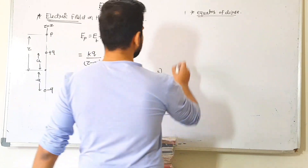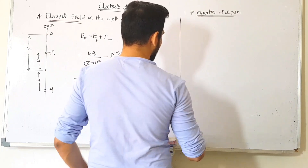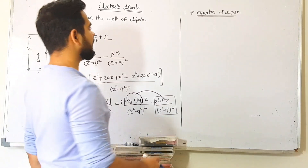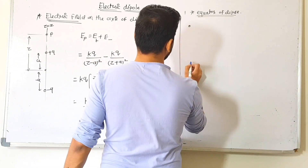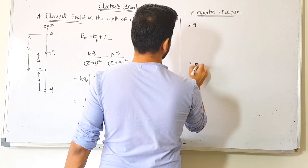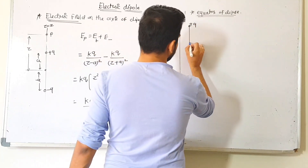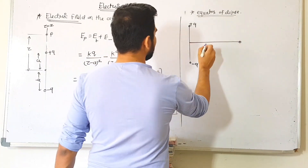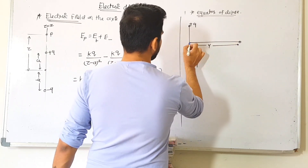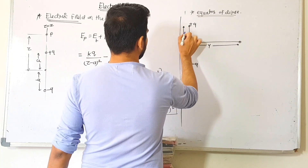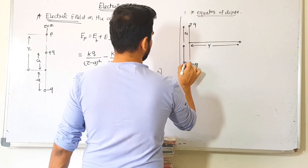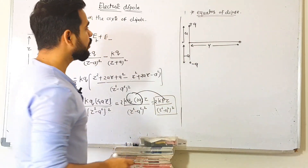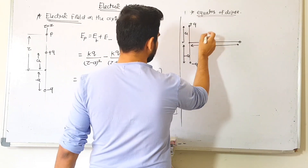Now let's look at the electric field on the equator of the dipole. The equator is perpendicular — at 90° to the axis. The positive charge is at +a, the negative charge is at −a on the z-axis. Point P is on the perpendicular bisector line at distance y from the origin. By Pythagoras, the distance r from each charge to point P is √(y² + a²).